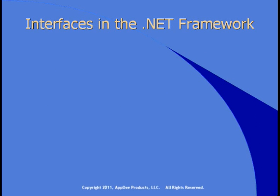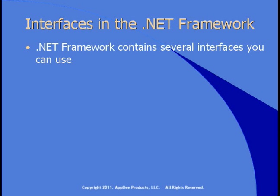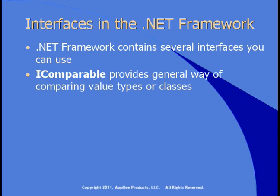The .NET framework has a number of interfaces you can use in your code. One that you'll use quite often, and we'll be using in the demo coming up, is iComparable. iComparable provides a general way to compare either value types such as integers, decimals, etc., or your own classes.